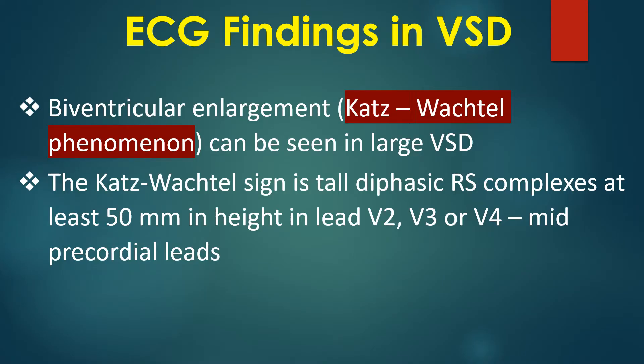Biventricular enlargement and Katz-Wachtel phenomenon can be seen in large VSDs. The Katz-Wachtel sign refers to tall diphasic RS complexes at least 50 mm in height in leads V2, V3, or V4 — the mid precordial leads.